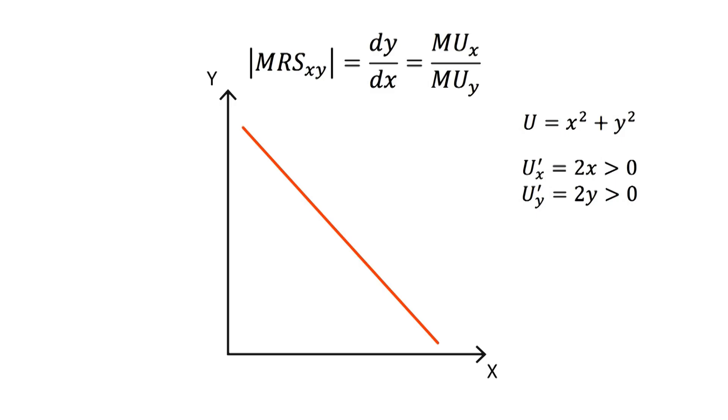Using the marginal rate of substitution formula, we get that the marginal rate of substitution for this utility function is equal to 2x divided by 2y, which simplified is the same as x divided by y. From this equation, we can learn that the marginal rate of substitution increases whenever x rises, as well as when y decreases. In its absolute value, the marginal rate of substitution is increasing, and hence its shape.